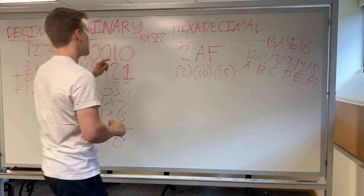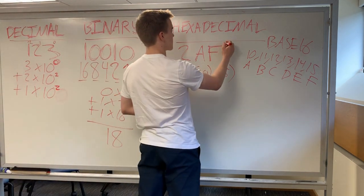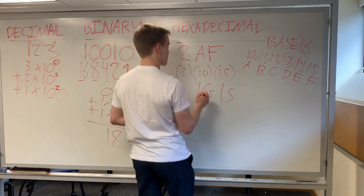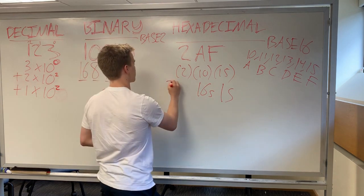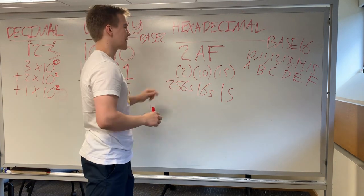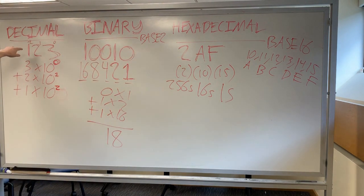So we similarly have to weight these, just like we did in binary and in decimal. So this is the 1's place, this is the 16's place, and then this is the 256th place. Again, increasing and multiplying by 16 each time, here we multiply by 2 each time, and decimal we multiply by 10.